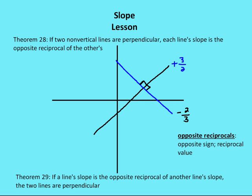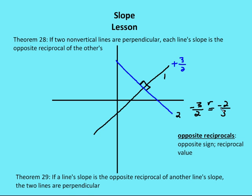Say we have line one — a black line — and line two — a blue line — and they are perpendicular, with the slope of the black line being three-halves. To find the slope of the blue line, I take two steps: first, I change the sign to get negative three-halves; then I take the reciprocal — inverting so the numerator becomes the denominator and vice versa — giving negative two-thirds. So the slope of the line perpendicular to line one is negative two-thirds.